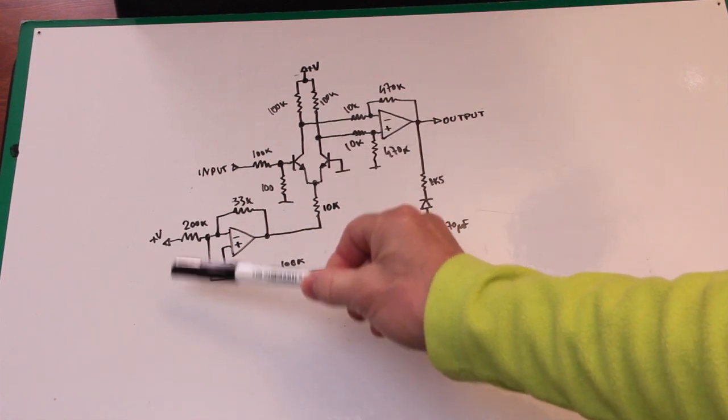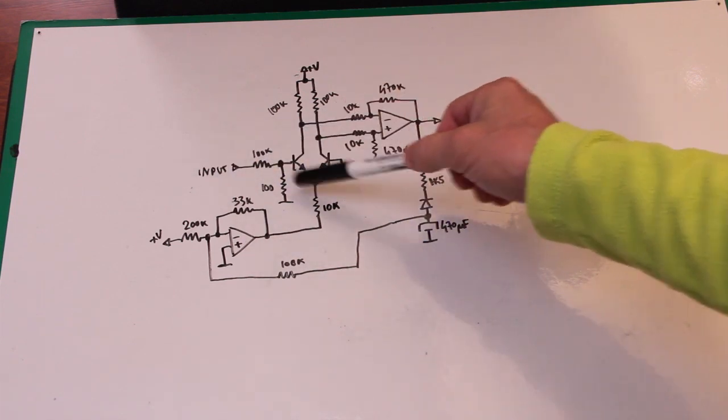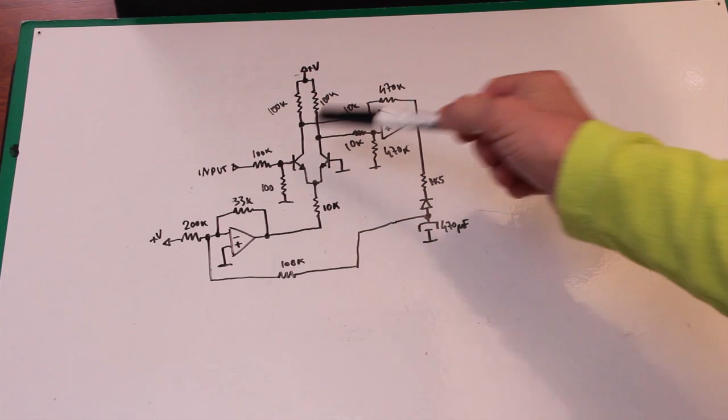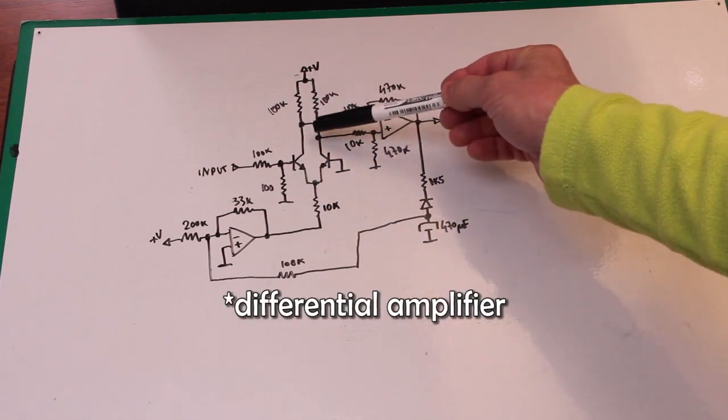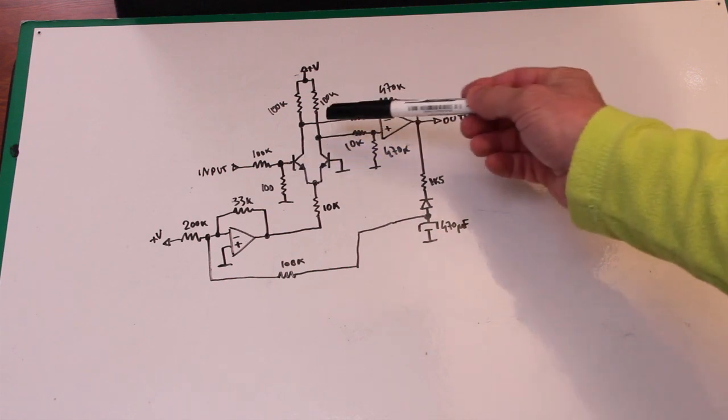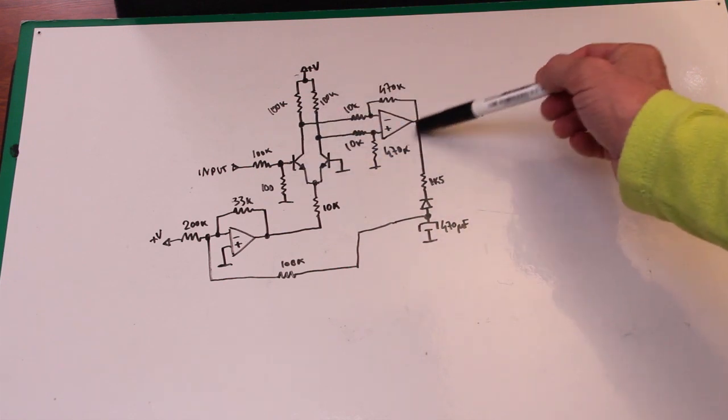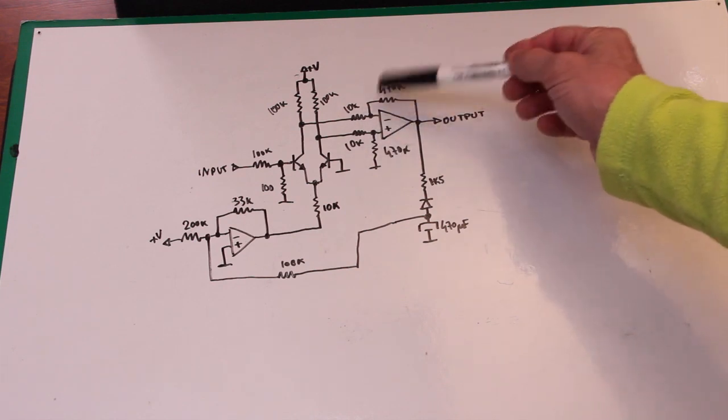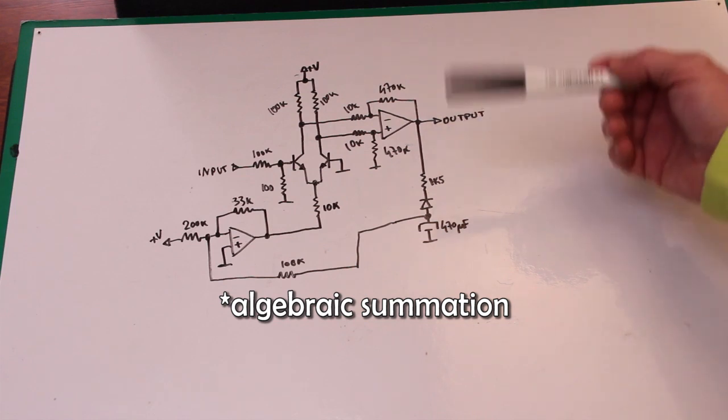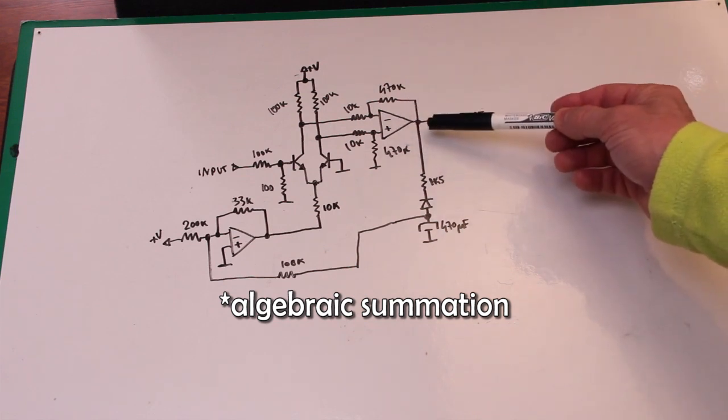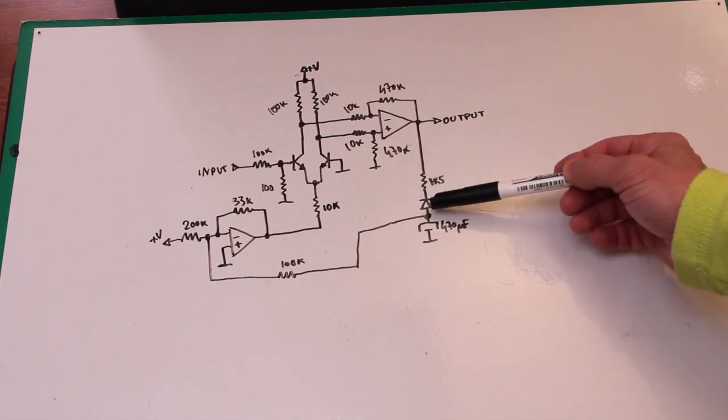The input signal comes here and here we have a differential input that is made with these two transistors and that is transferred to this operation amplifier that sums this signal and differential and gives the output. The signal in this case is rectified and the negative part is kept and delivered.